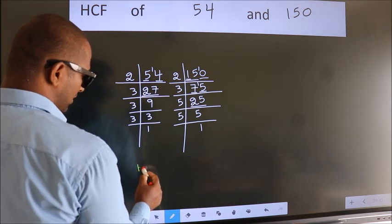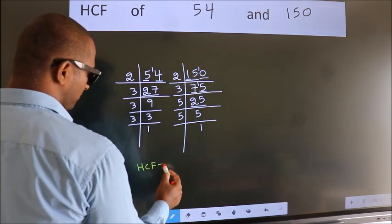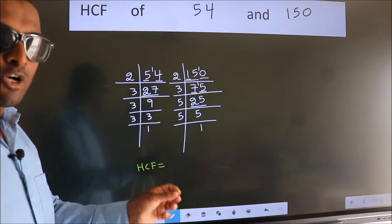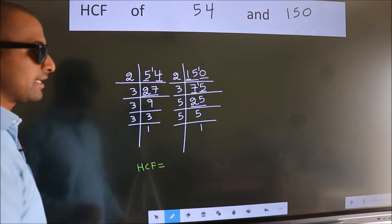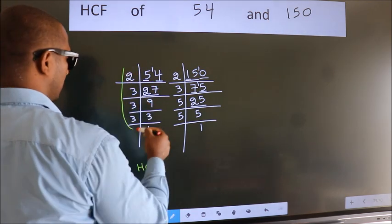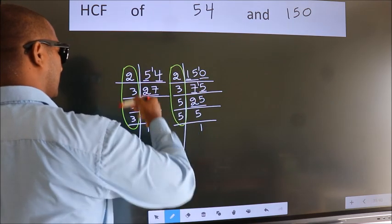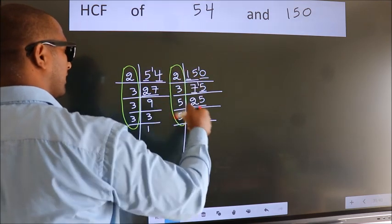Therefore, our HCF is the product of the numbers which should be present over here and also here, here and here.